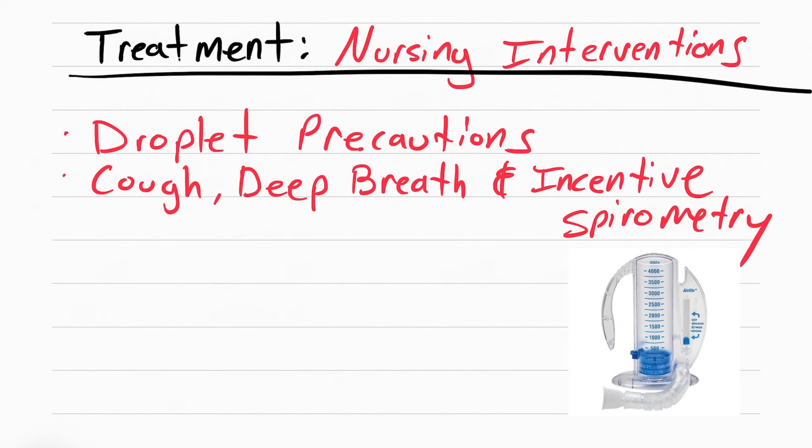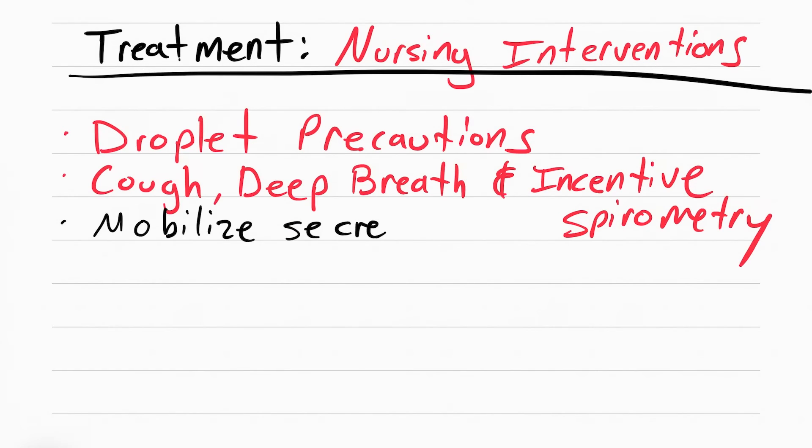To help the patient get better faster, have the patient cough, deep breathe, and use the incentive spirometer. This opens up any alveoli that have collapsed, also called atelectasis. We also want to mobilize the patient's secretions. This can be done with chest physiotherapy, which usually the respiratory therapist does, fluids, and suctioning.